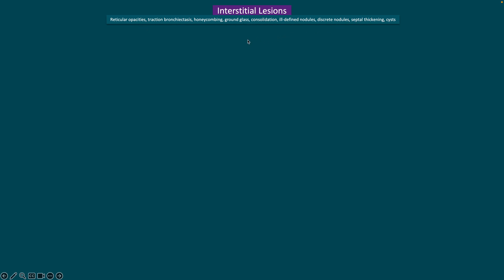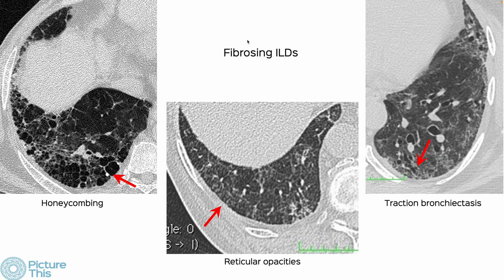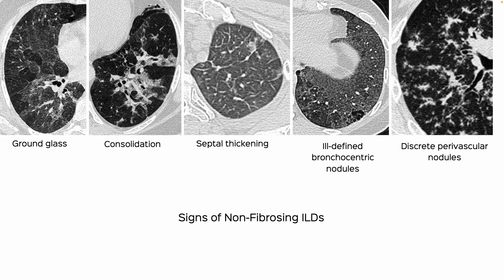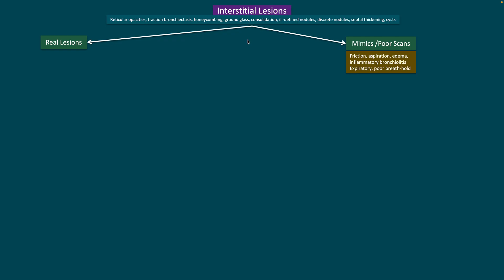Let's run through the curriculum. The interstitial lesions now include cysts, giving us nine signs to look at. Week one will focus on these lesions and updated definitions and terminologies — the three signs of a fibrosing ILD, five signs of a non-fibrosing ILD, and cysts, which can appear by themselves or as part of an interstitial lung disease.